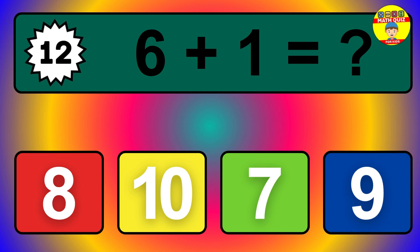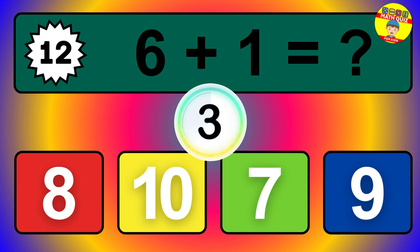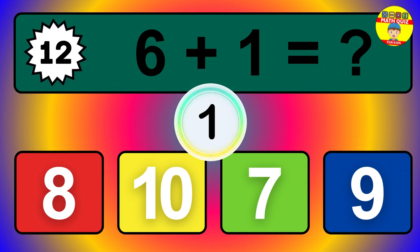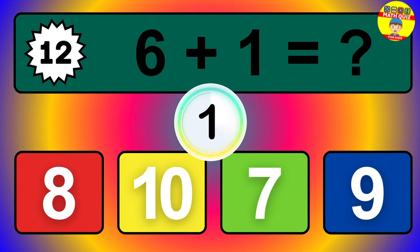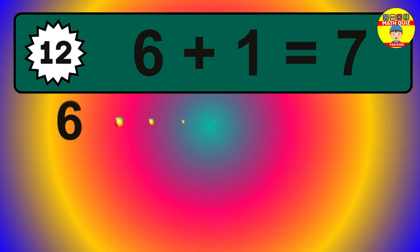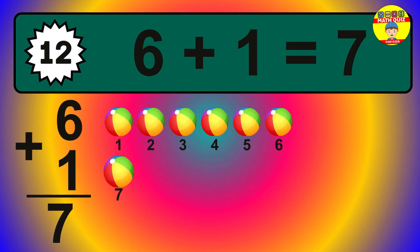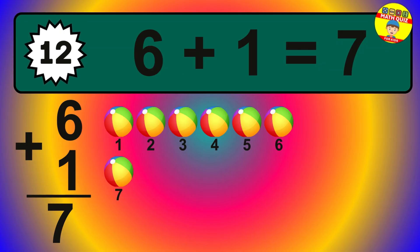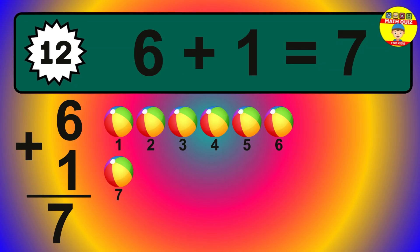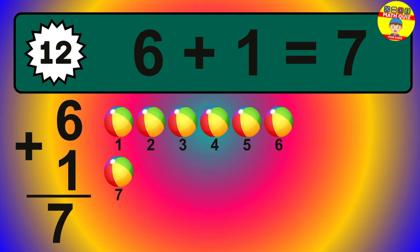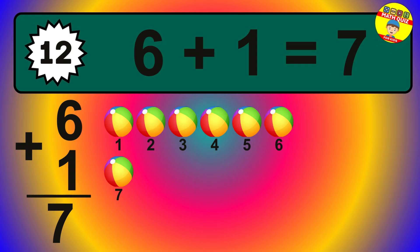Question 12. 6 plus 1 equals what? So the answer is 6 plus 1 is 7. Let's count it: 1, 2, 3, 4, 5, 6, 7.